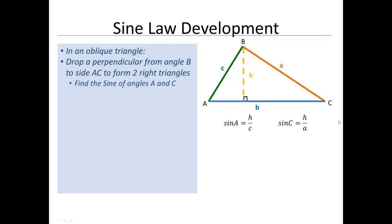We can now use a little bit of algebra and rearrange these expressions for H. So I'll get H is C times sine A, and H is A times sine C. And recognize that the two H's from the two expressions are the exact same H in our triangle.